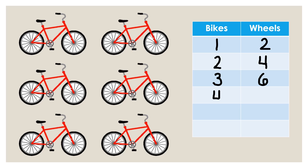What about four bikes? Five bikes will have a total of ten wheels. How many wheels will there be with six bikes? Twelve wheels.